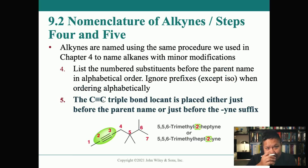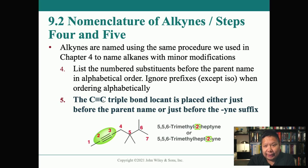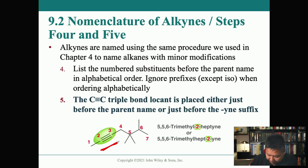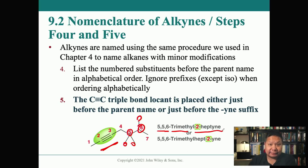List the substituents before the parent name alphabetically, ignoring prefixes except for iso. The carbon-carbon triple bond locant is placed just before the parent name or just before the -yne suffix. In our example, we have the alkyne at position two — carbon number two — and three methyl groups: two at carbon five and one at carbon six. So we get 5,5,6-trimethyl-2-heptyne.